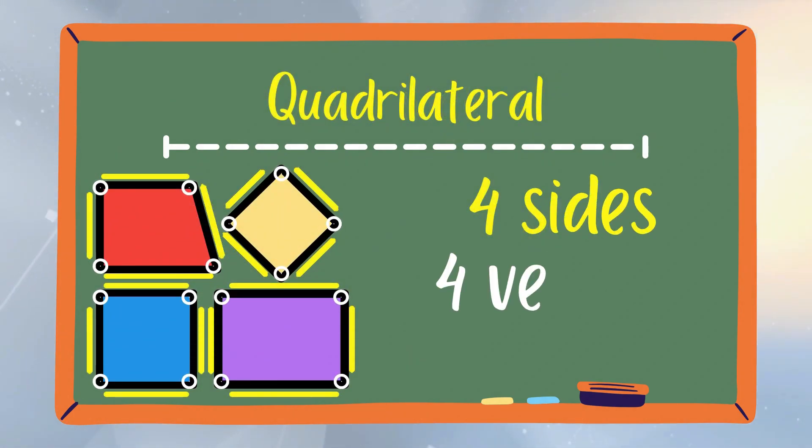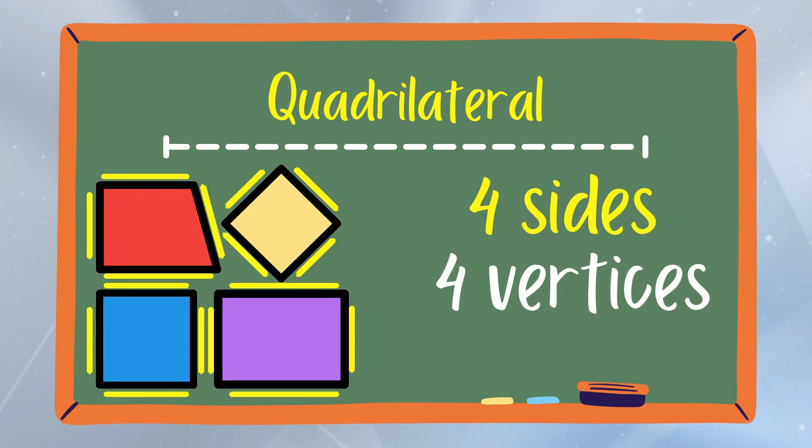Quadrilateral has four sides and four vertices. Trapezoid, rhombus, square, and rectangle are some of the examples of quadrilateral.